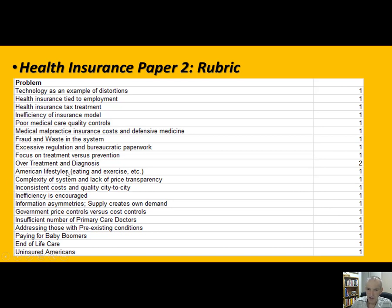We'll talk about Americans and special lifestyle issues, the system's complexity, and how little we know about what things cost or the quality of care, and how inconsistent cost and quality are city to city. We'll also see how inefficiencies are actually encouraged. We'll talk about supply creating its own demand because doctors have more information than patients. The second article will directly criticize the government for controlling prices when what we need are controls on cost.